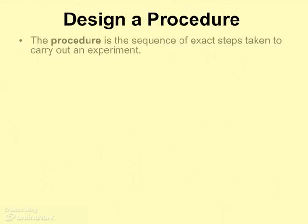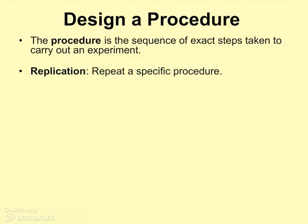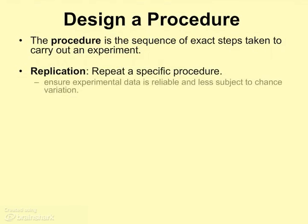Every good experiment is going to have a very clearly written procedure — that sequence of steps taken to carry out the experiment — so that someone else can go ahead and replicate the exact same experiment and, hopefully, get the same results. Each time this is done, we add more experimental data, and that adds reliability because there's less chance variation.